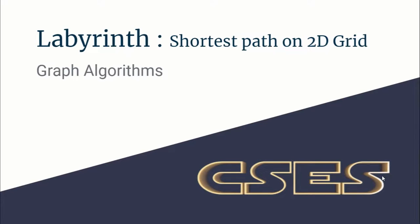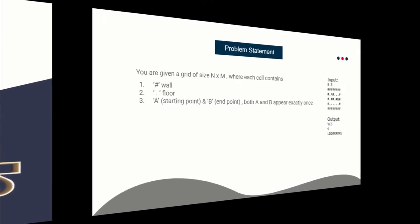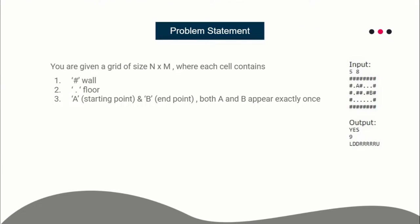Hello guys, this is 'Quote Unquote' and this is a video tutorial for the problem 'Labyrinth' taken from CSTS graph algorithm section. The problem statement is: you are given a grid of size N cross M. Each grid cell can either contain a wall, a floor, or A or B, where A represents your starting point or source and B represents your ending point or destination. You have to print the shortest path from A to B. It is guaranteed that there is only one A and only one B.